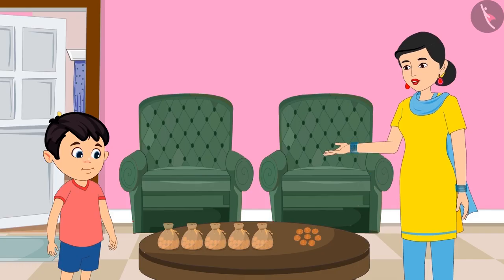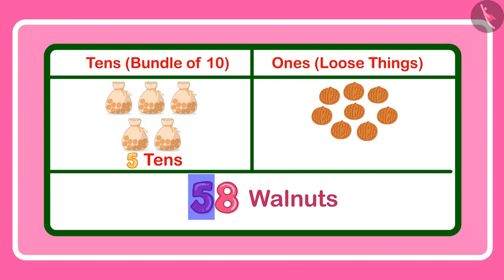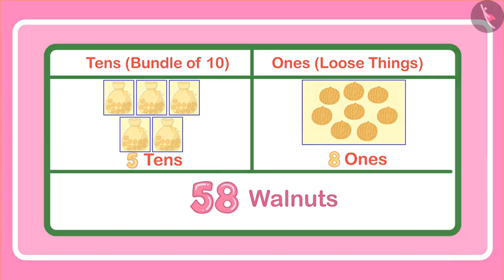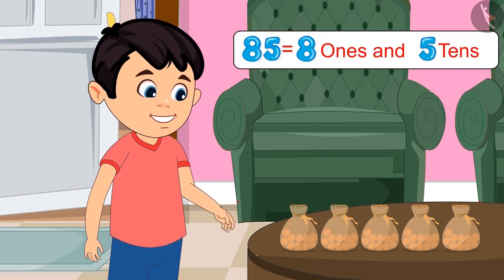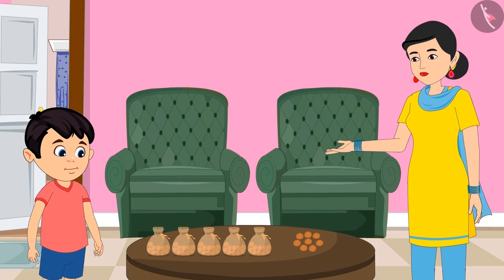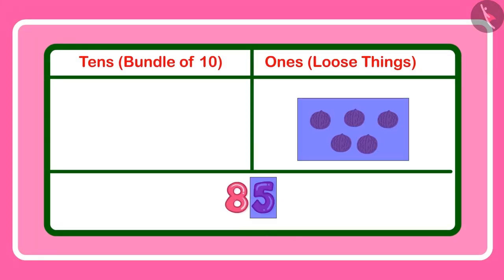Oh Chotu, you have brought a lesser number of walnuts. I had asked for 85 and these are only 58. Because you took 5 pouches of 10 walnuts each and 8 loose nuts. Come tell me, how many 10s and 1s does 85 have? Chotu says 85 has 8 ones and 5 tens — but oh no Chotu, this is incorrect. 85 has 5 ones and 8 tens.